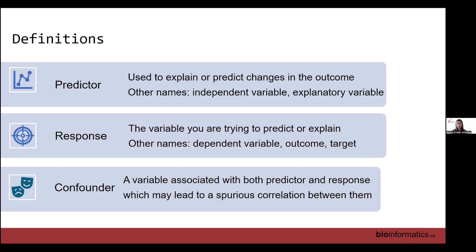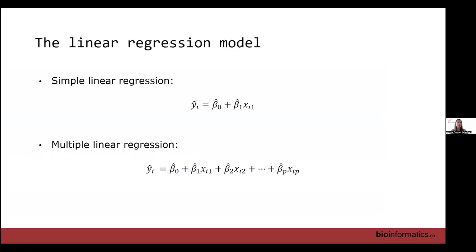Without accounting for confounders in our regression model, we might see a spurious correlation between the predictor of interest and the response. Going over the basic linear regression model: in simple linear regression, we have a single predictor x1. Beta-naught is our intercept — the estimated value of y when x is 0 — and beta-1 is the estimated change in y when we increase x by 1 unit. In multiple linear regression, we add extra variables x1 through xp, each with their own corresponding coefficient.